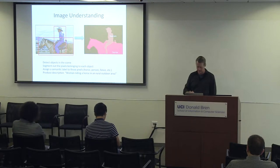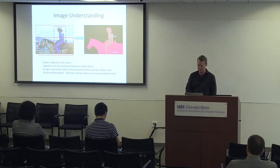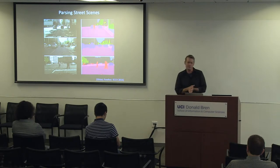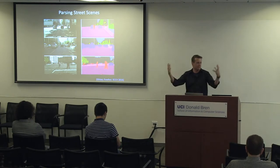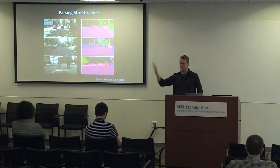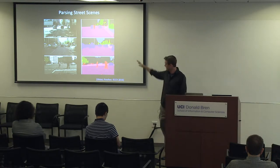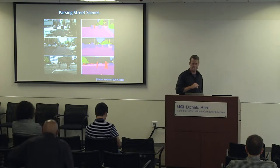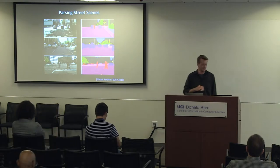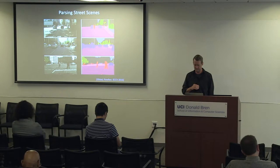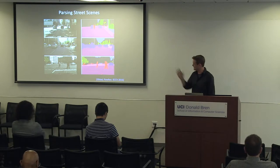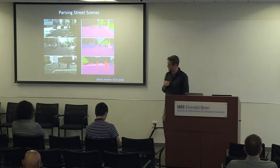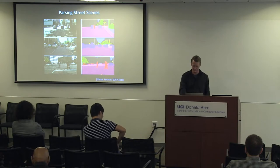One version of this problem we're interested in is scene segmentation. Here are examples from our group of taking input images of street scenes and parsing out exactly what's going on — labeling which pixels are the street, finding pedestrians walking across in front of the scene, detecting cars, and so on. This is the kind of thing that would be very interesting if you're building a self-driving vehicle.